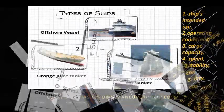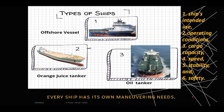Ships are designed to fit a certain purpose through a process known as naval architecture. Naval architects and marine engineers work together to design ships that meet specific requirements and fulfill their intended functions. The design process involves considering various factors such as the ship's intended use, operating conditions, cargo capacity, speed, stability and safety.